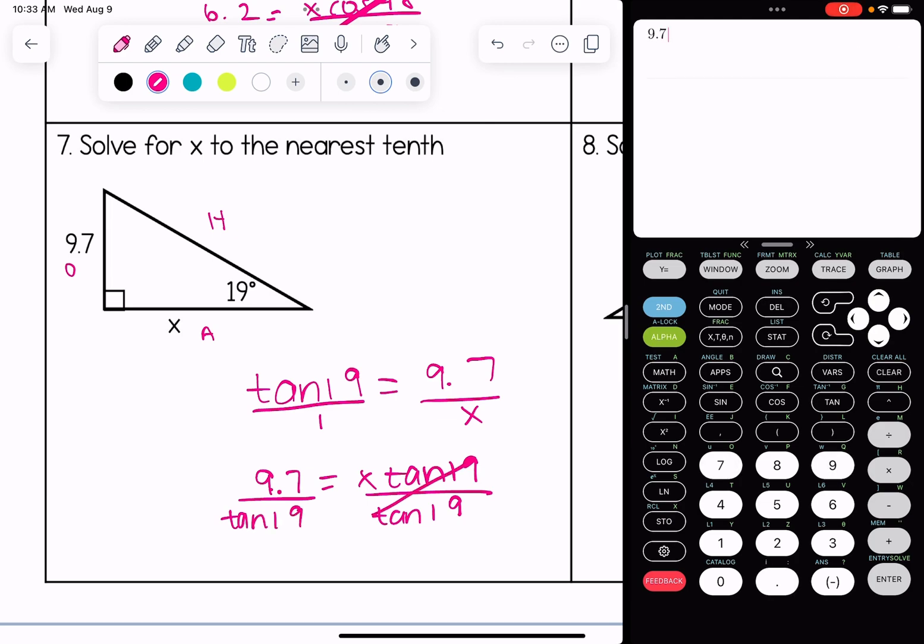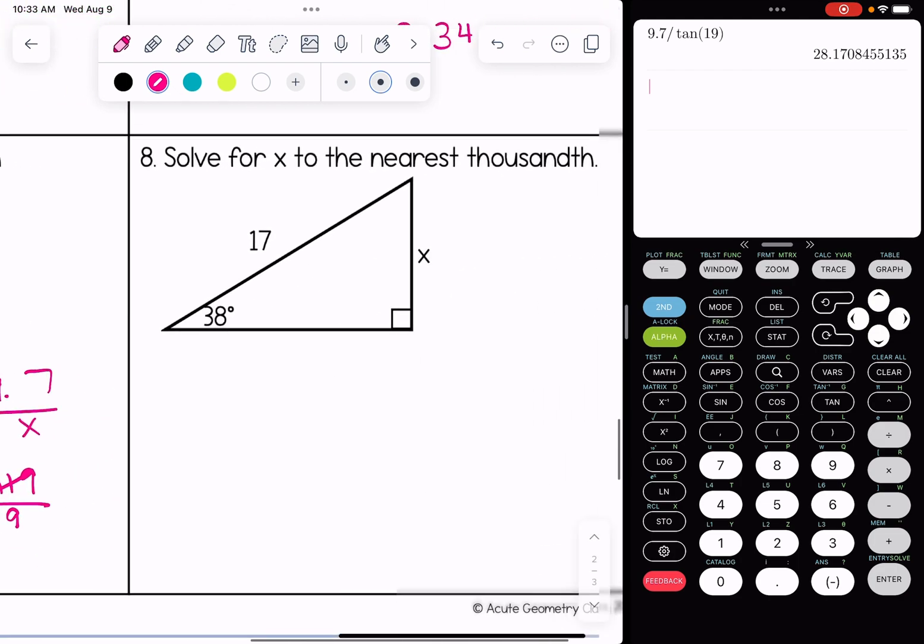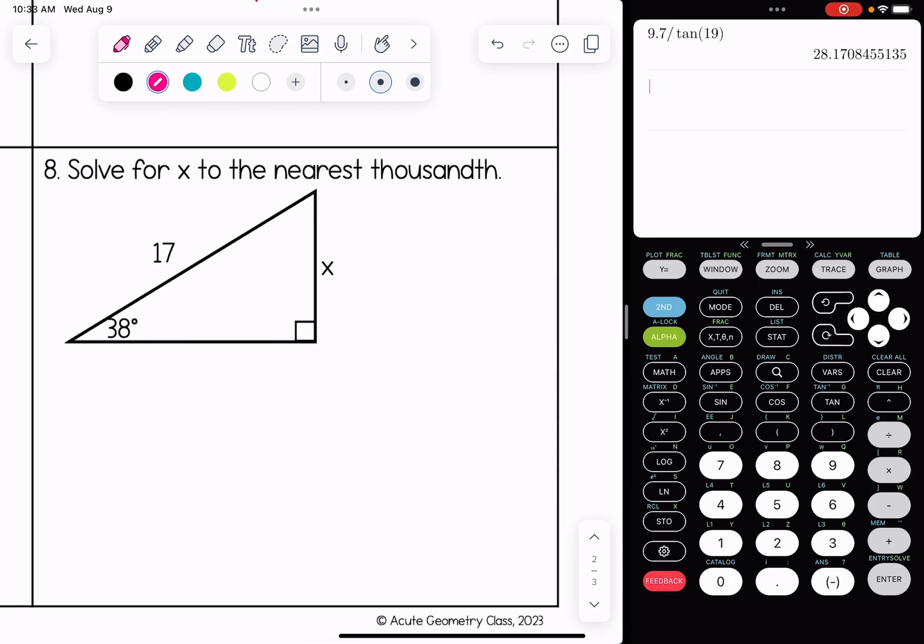Last problem, everybody. Number eight, we're solving for x to the nearest thousandth. Opposite, hypotenuse, and adjacent sides are labeled.